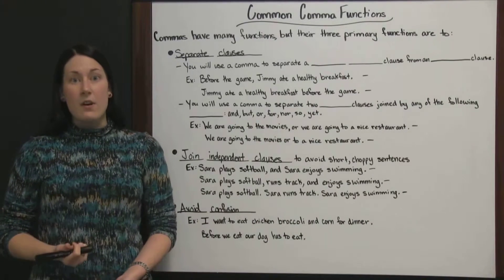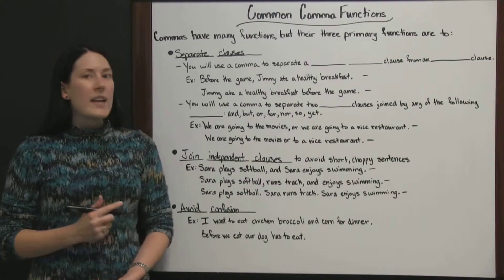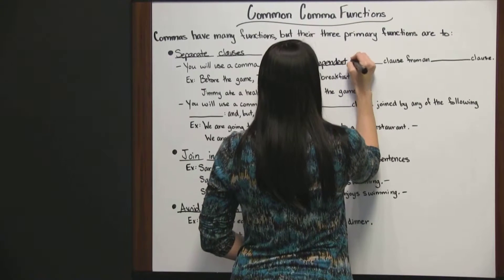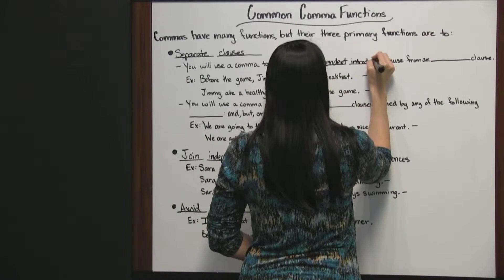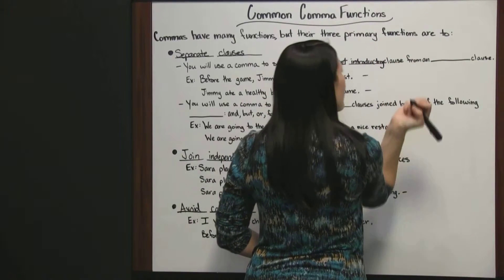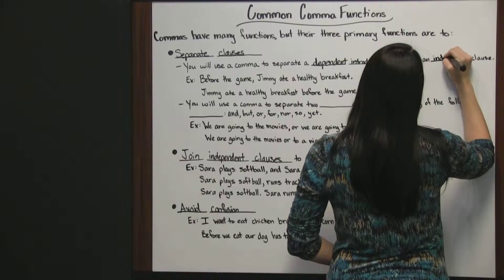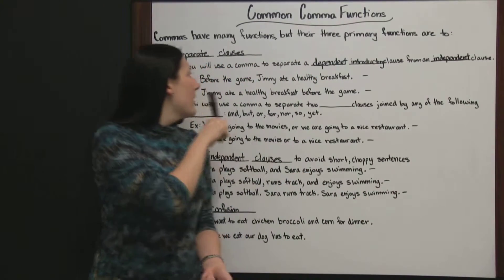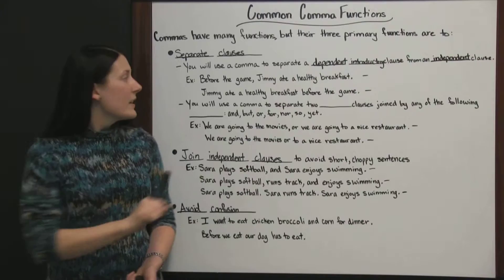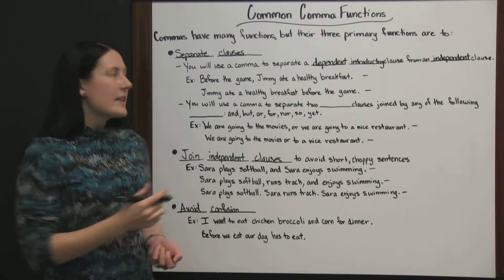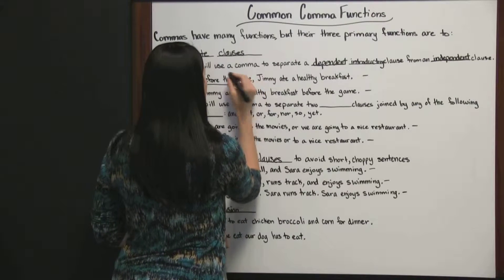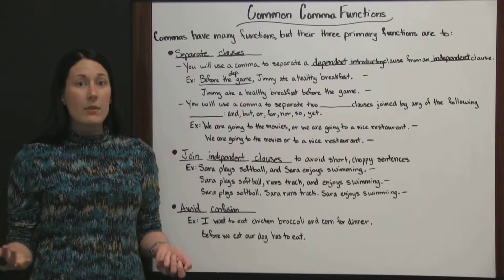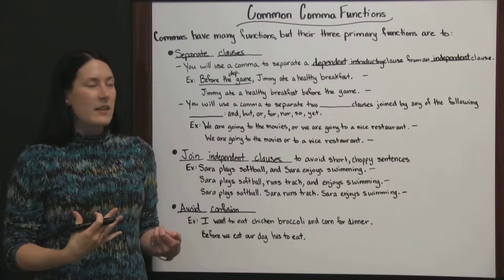Let's look at how we can separate clauses with commas. You will use a comma to separate a dependent introductory clause from an independent clause. One way that dependent clauses are used is as an introduction to a sentence. For instance, 'Before the game, Jimmy ate a healthy breakfast.' We use this comma to separate the dependent clause — 'before the game' is dependent. You cannot say 'before the game' all by itself and have it be a complete sentence; it's only a prepositional phrase, so it is a dependent clause.